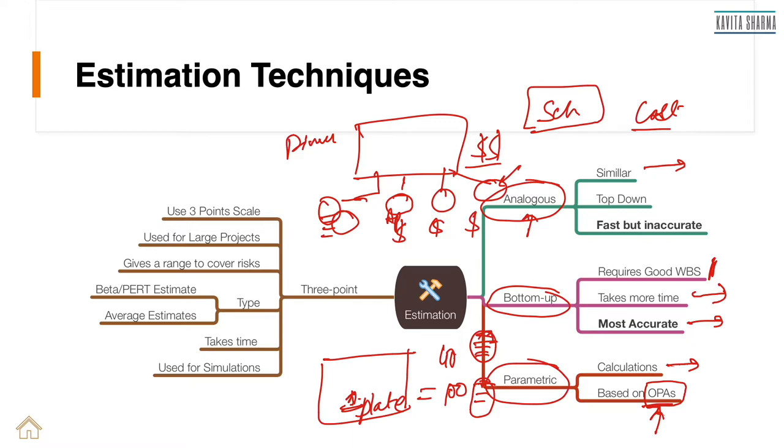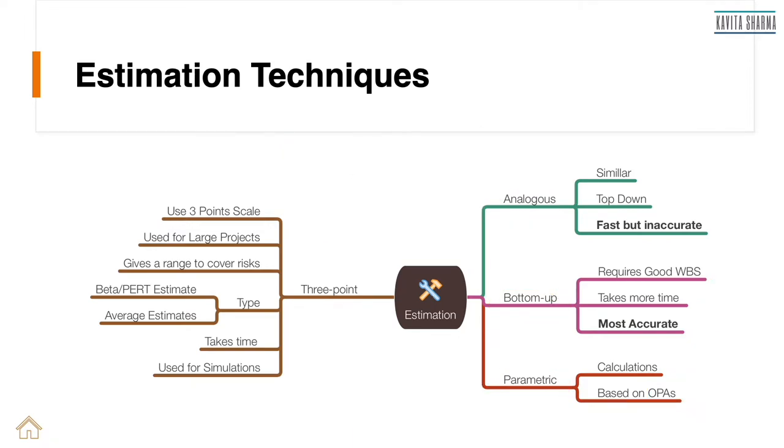Let's look at the next one, which is three point estimate. Now as the name suggests, it is three point estimate. What does it mean? I use three points to come out with the estimates. What are those three points to elaborate further? Let me give you an example.